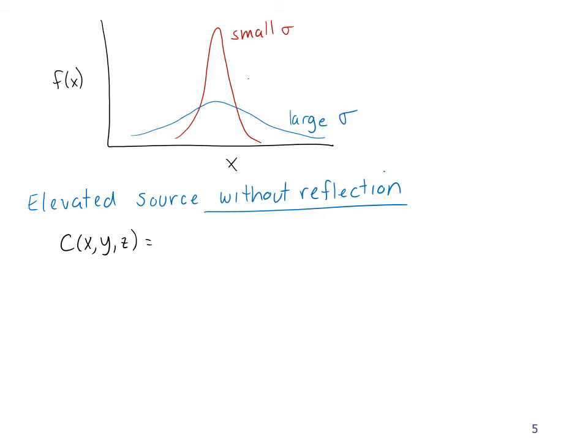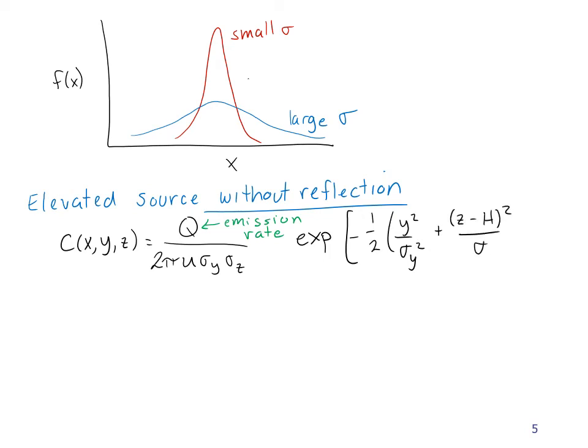But it is C at XYZ, so the concentration at some point in space XYZ is equal to Q, which is the emission rate, not the volume flow rate, and this use of Q is particular to the Gaussian plume equation, divided by 2 pi U sigma Y sigma Z, all times the exponential of minus 1 half times Y squared over sigma Y squared plus Z minus H squared over sigma Z squared.